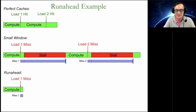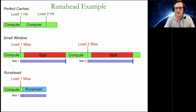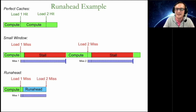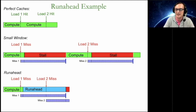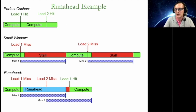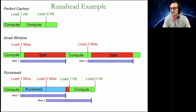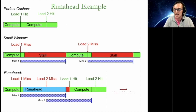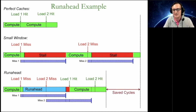What run-ahead does is when it gets to the first stall — when the oldest instruction becomes the long latency cache miss — you enter the speculative processing mode, and instead of stalling, you keep processing instructions. Hopefully, you get to this independent long latency cache miss, which you can service in parallel with the original cache miss. When the original cache miss returns, you flush the pipeline and re-execute. But when you get to the second load, you don't miss anymore because you've already serviced the cache miss in parallel. So you save cycles.